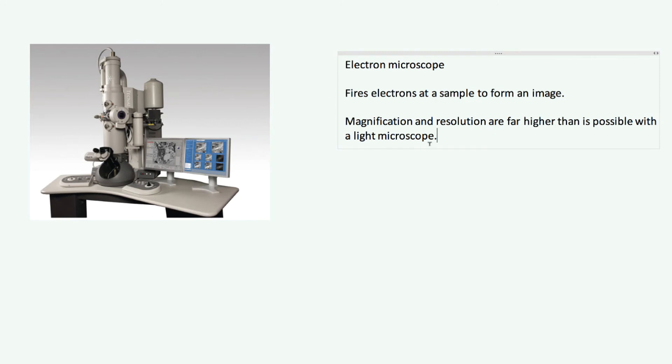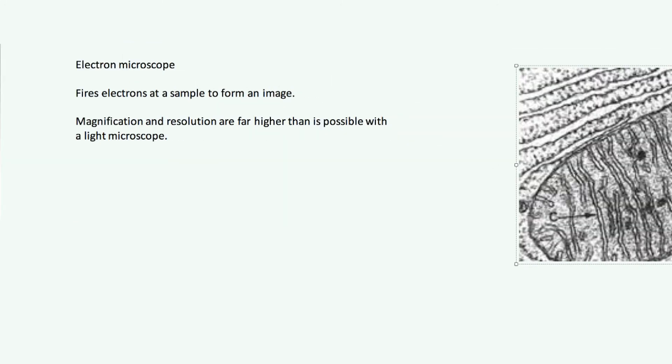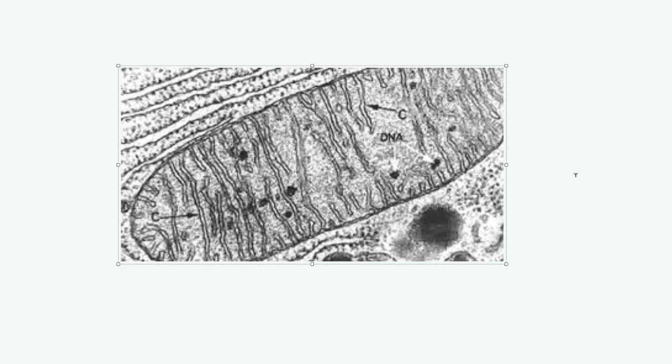Let's have a look at an example image from an electron microscope. This is actually a mitochondria. You can already tell we've zoomed in way further than we could with a light microscope, because you can see the internal structures of the mitochondria. The mitochondria is way smaller than the nucleus and is found inside the cell — the fact that we can see inside it means we've zoomed in far more than a light microscope allows. You'll also notice this image is black and white, because we're not using light so we're not detecting colour. Some electron microscope images you see are coloured, but that colour has been added afterwards by computers.